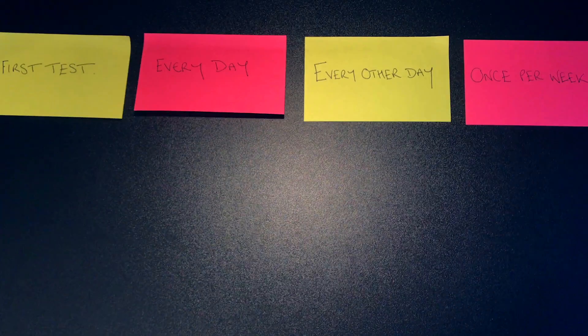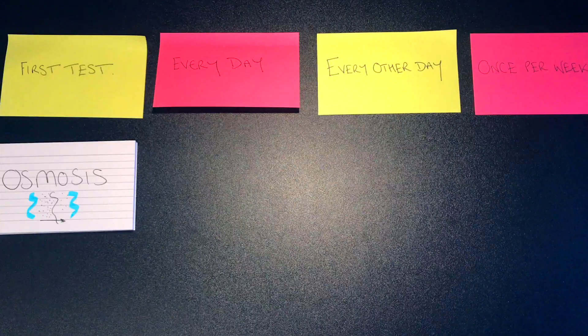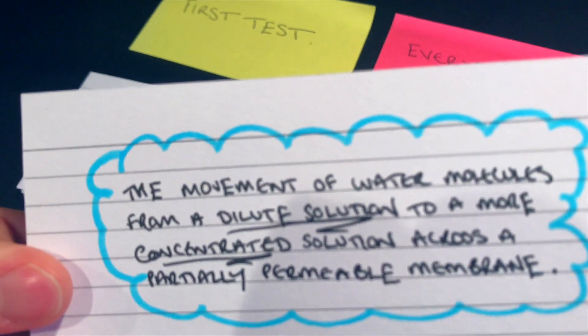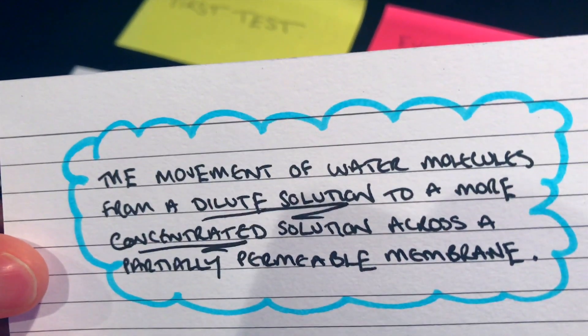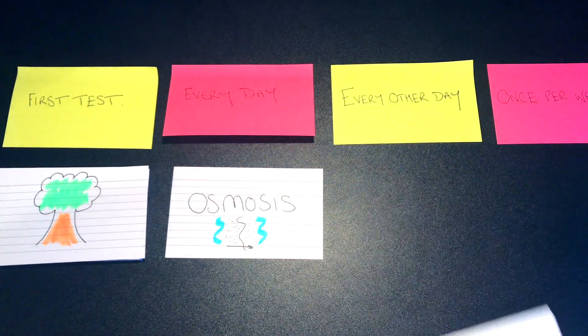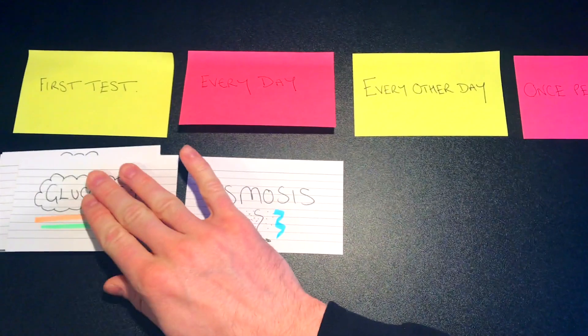The second way of using spaced repetition is a system using flashcards. Using sticky notes, create a timeline of dates spaced further and further apart. Write your flashcards and place them all under the first sticky note. Test yourself using active recall — scan the card, then try to recall the information without assistance. If you get it right, move it to the next sticky note. If you get it wrong, it goes back to the first review sticky note no matter where it was in the system. This way you get a clear idea of what you do and don't know, spacing your repetitions accordingly to help you remember all the way up to exam day.